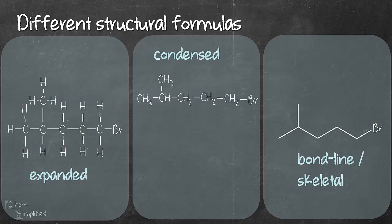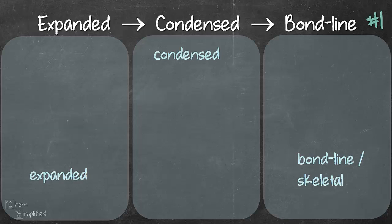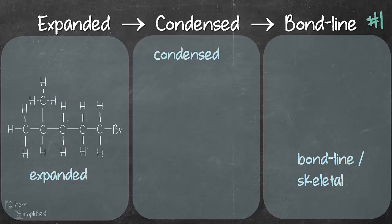So now that we are familiar with how these three types look like, let's go ahead and try with our first example drawing from expanded and we move to condensed and then from condensed we draw to bond line. So let's start with our first example.